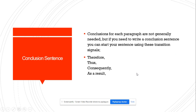The last part of the body paragraph is the conclusion sentence. Conclusions for each paragraph are not generally needed, but if you need to write a conclusion sentence, you can start your sentence using these transition signals: for example, therefore, thus, consequently, as a result.